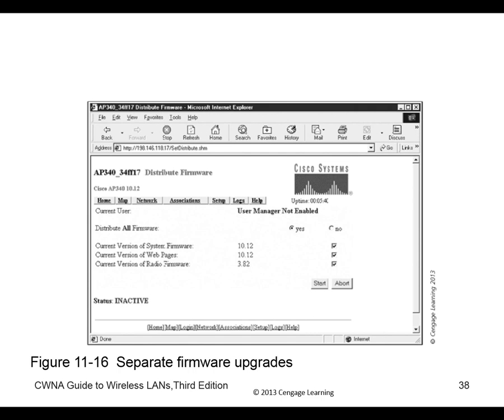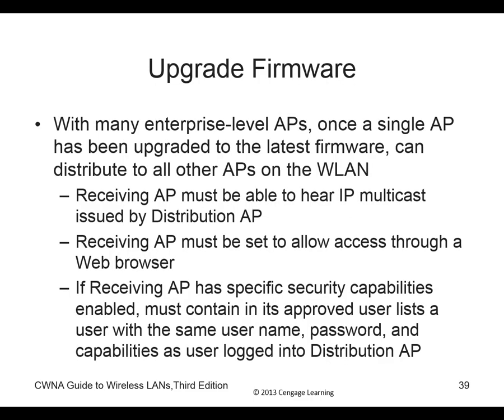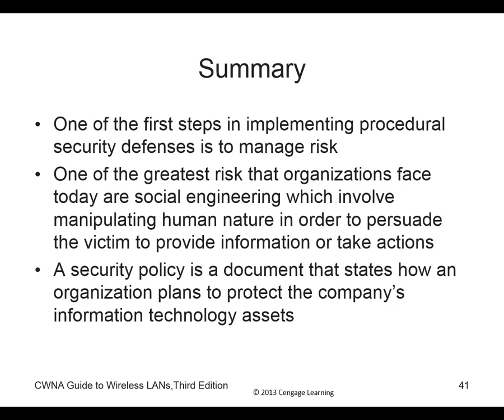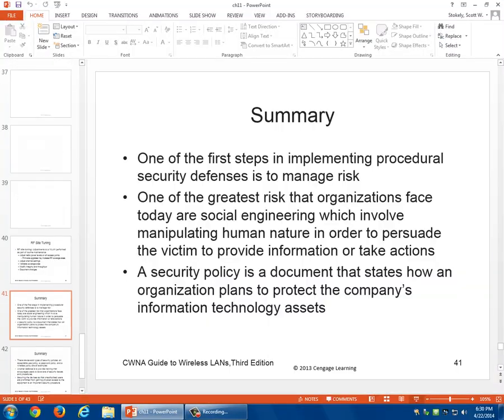At the enterprise level, Cisco can distribute firmware — once one device is updated, it replicates to all others. RF site tuning adjusts channel settings and signal strength to ensure coverage area is maintained, even if one WAP goes down for maintenance.